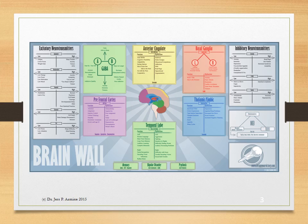This is the Brain Wall. As you will note, different areas of the brain are color-coordinated with their areas of function and dysfunction. There are sections for excitatory and inhibitory neurotransmitters, as well as an area to initiate the understanding of the concept of neuroendoimmunology.